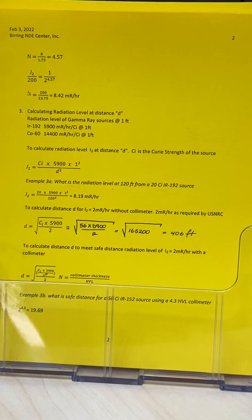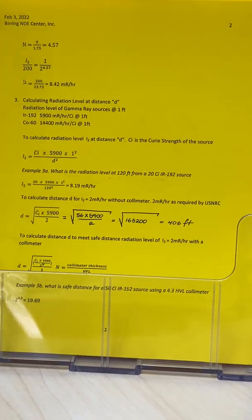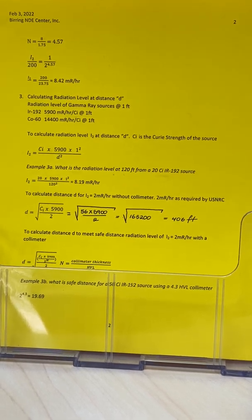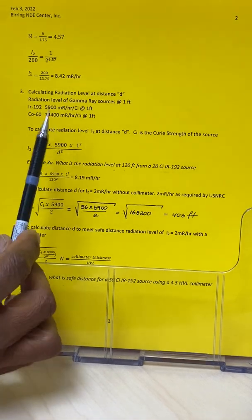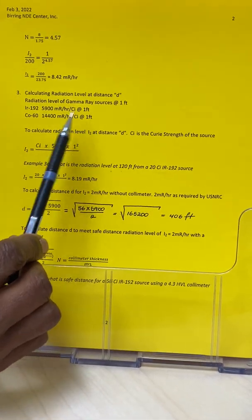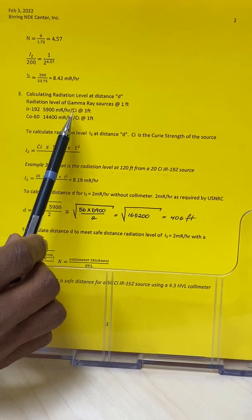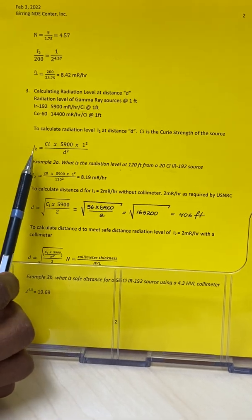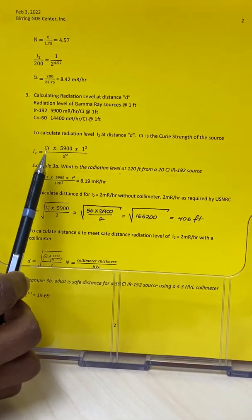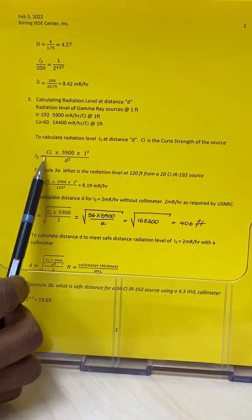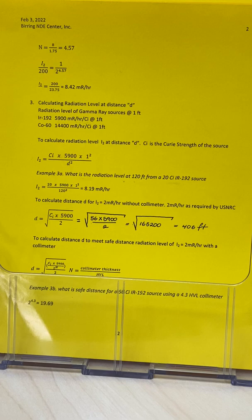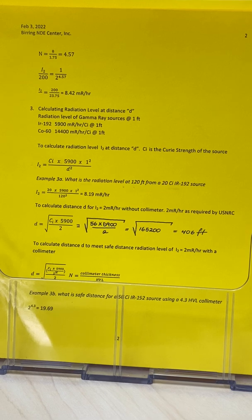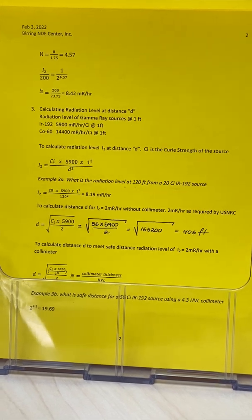Here is a calculation for half value layer. The next one is calculating the radiation level at any distance for any curie strength source. If you're using iridium-192, the radiation level at one foot is 5,900 mR per hour per curie. Here is the formula for that. You can calculate the radiation level at distance d for any curie. If it's 50 curies, you substitute 50 here and put the distance here.